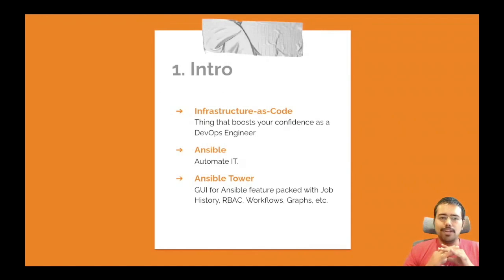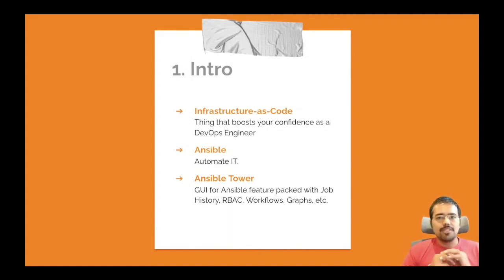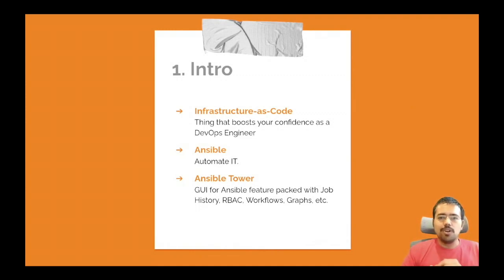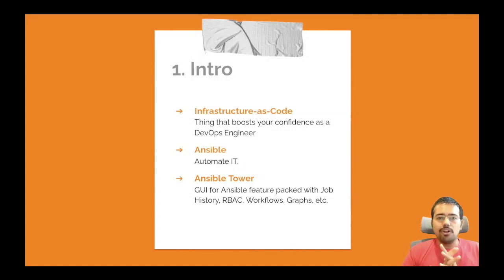The main topic covers three important things: infrastructure as code, Ansible, and Ansible Tower. Infrastructure as code is very important and helps boost your confidence as a DevOps engineer. Ansible and Ansible Tower are the two automation tools that will help you automate all of your infrastructure activities.